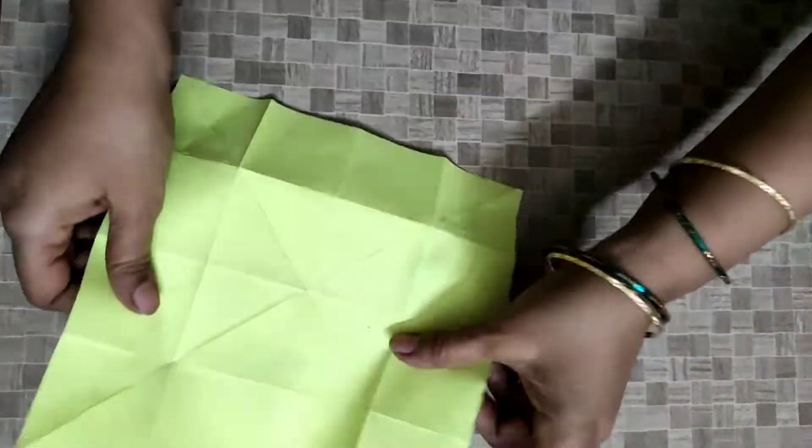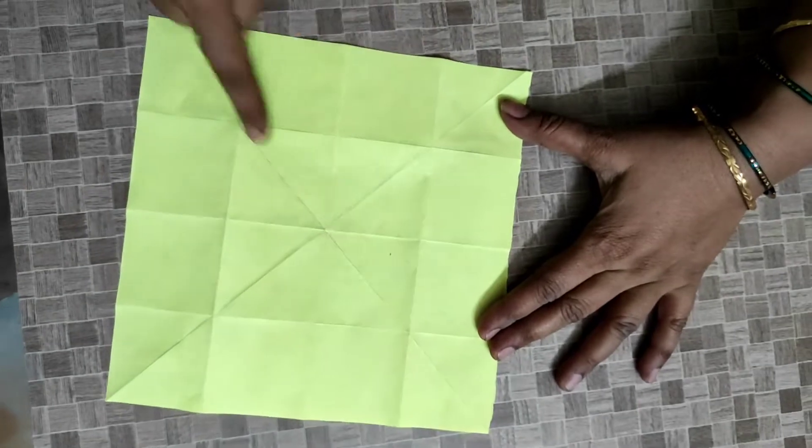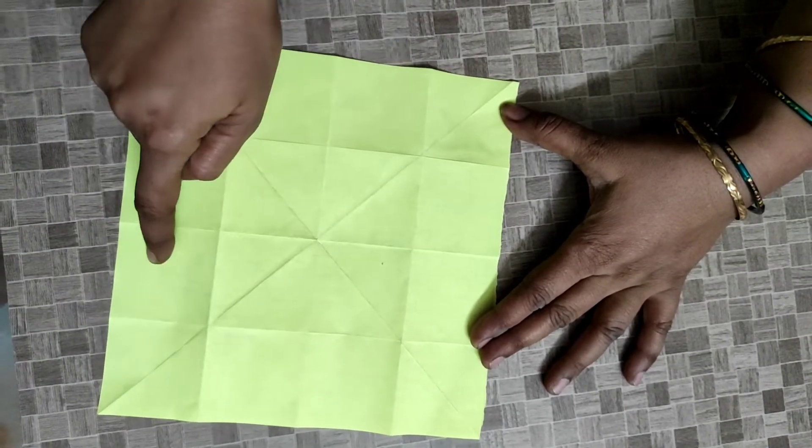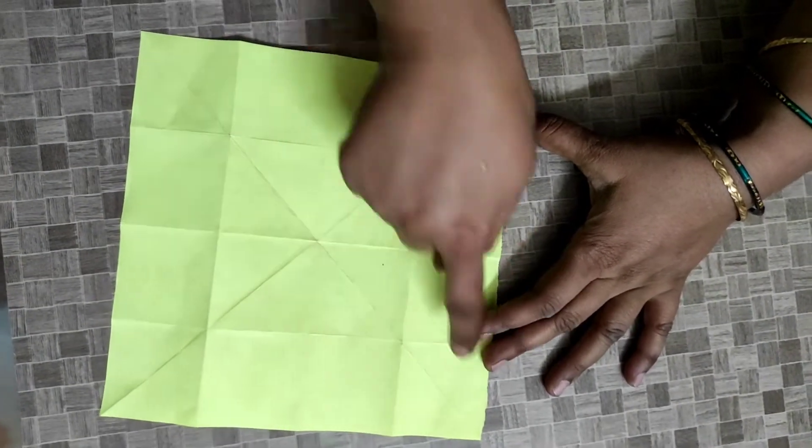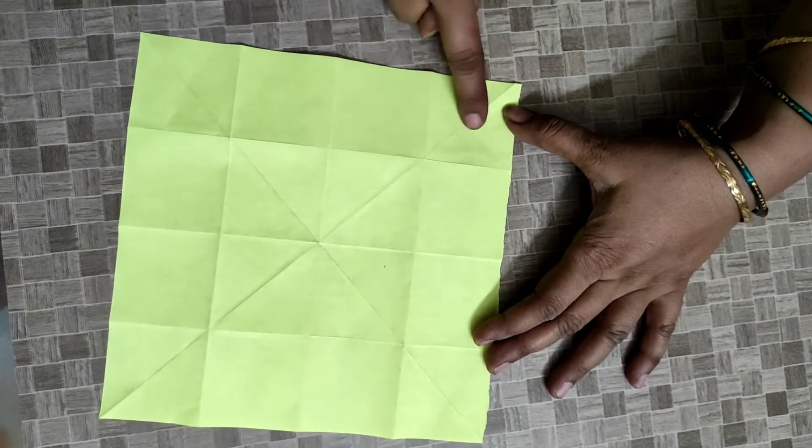Now the paper is visible like this: two cross sections and four equal parts vertically and horizontally. Four equal parts here we will get.